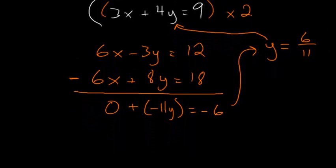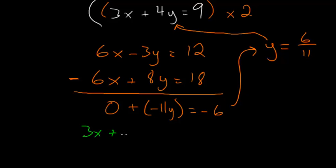So our second equation becomes 3x plus 4 times 6 over 11 and that's equal to 9. If we simplify, we have 3x plus 24 over 11 is equal to 9.